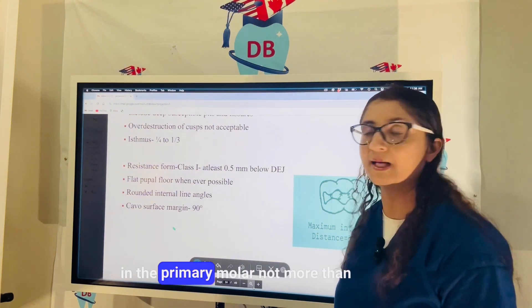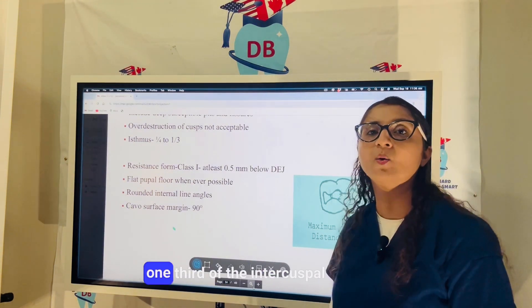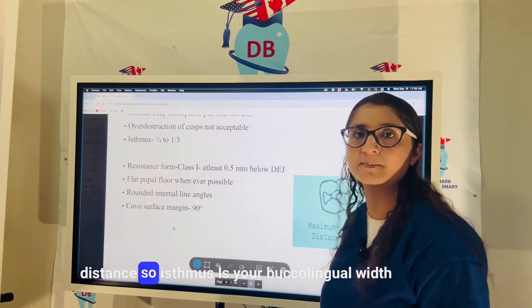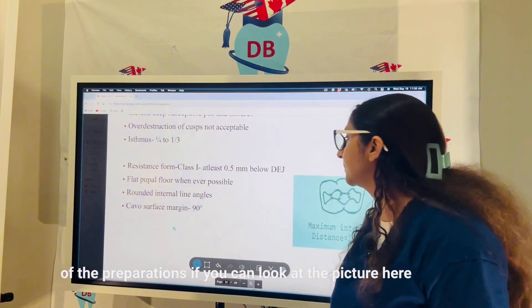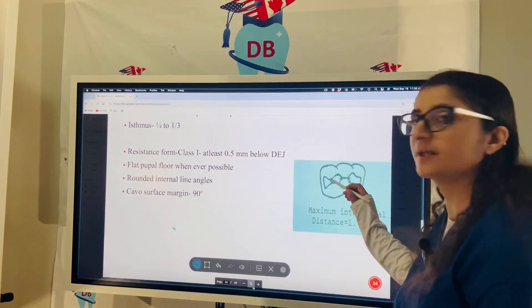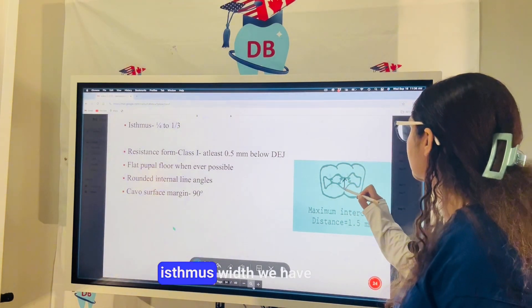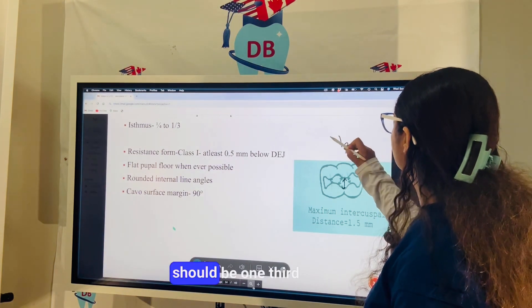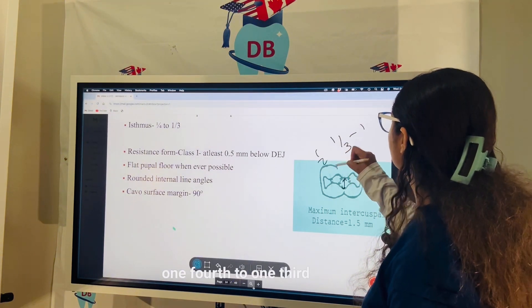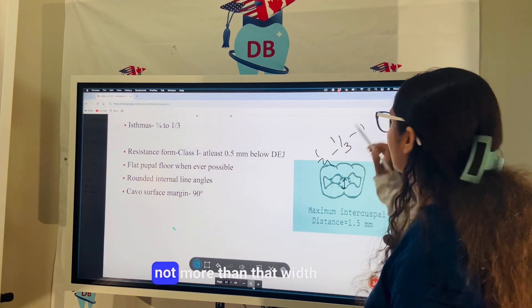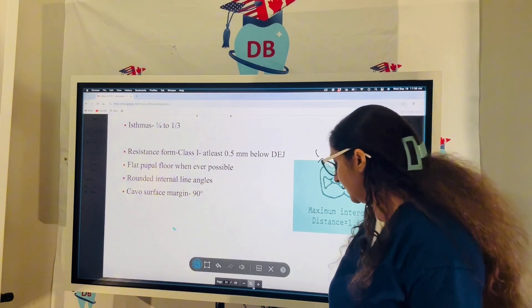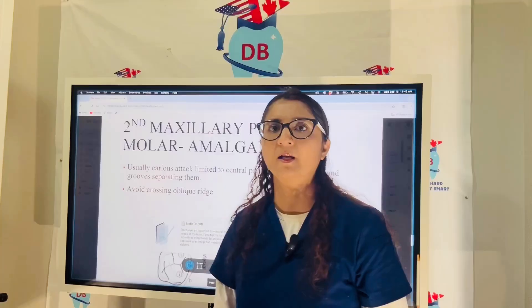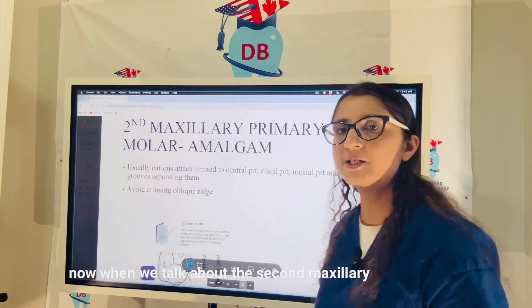The isthmus width in the primary molar should be narrow — not more than one-third of the intercuspal distance. The isthmus is the buccolingual width of the preparation, and as you can see in the picture, it should be one-fourth to one-third at most. A flat pulpal floor gives the resistance form to your preparation.